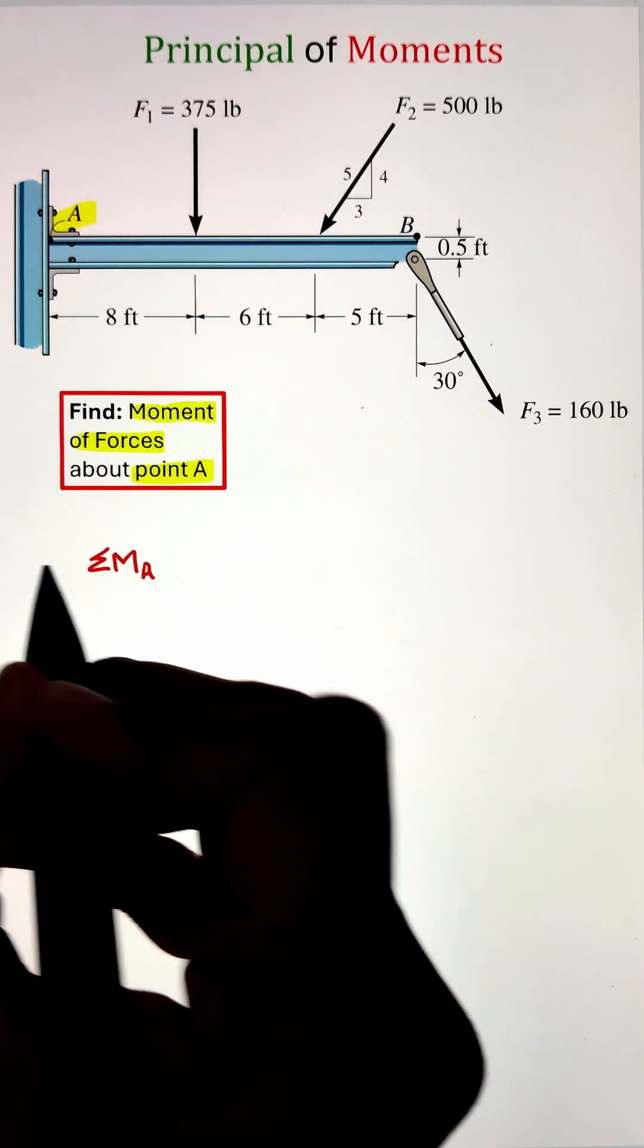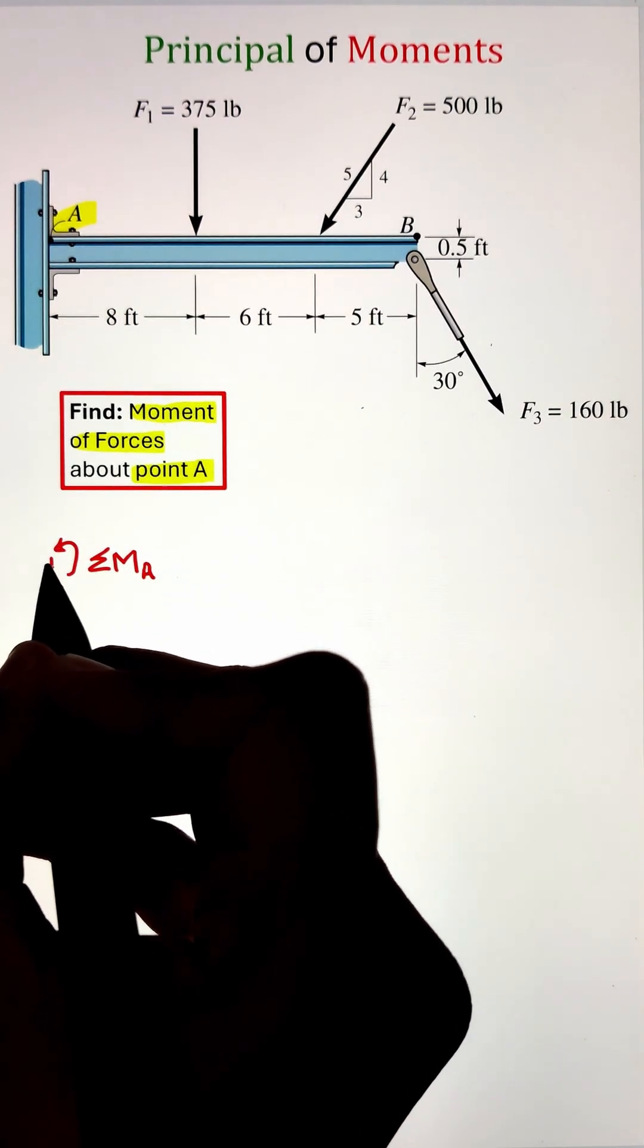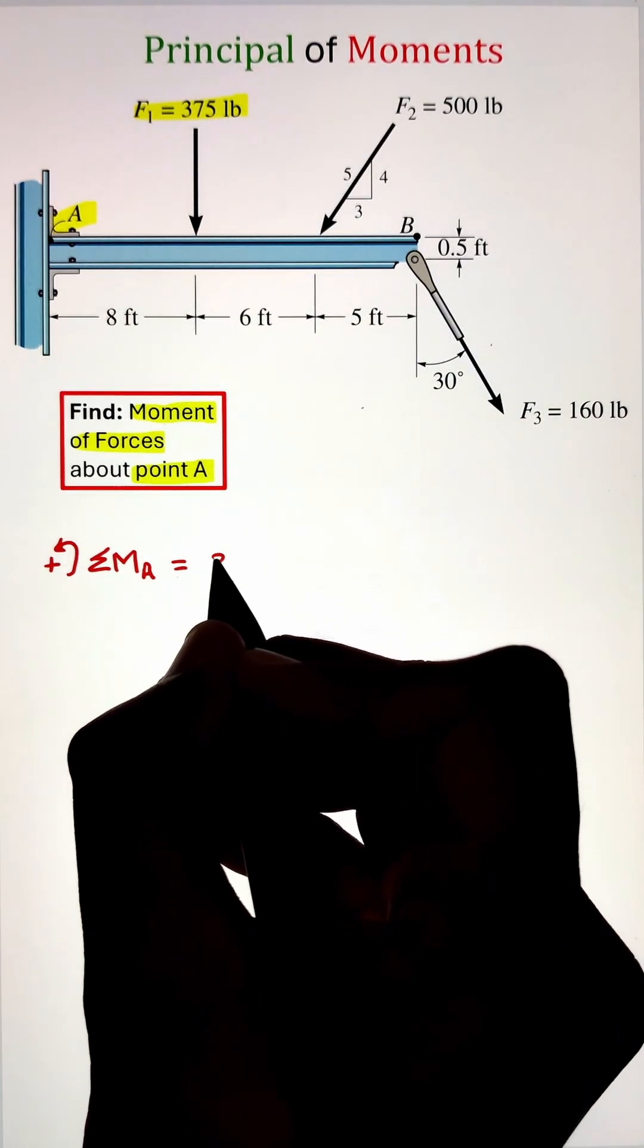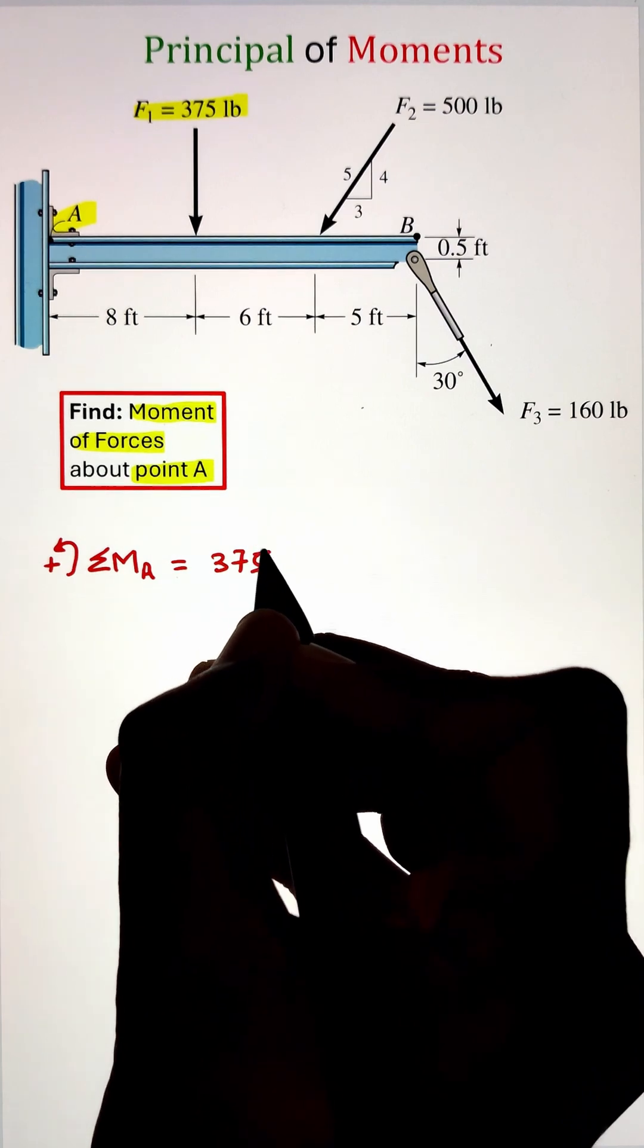Next, let's look at force F1 having a magnitude of 375 pounds acting vertically downward. The moment arm this force makes with point A is 8 feet. Multiplying the force with its moment arm will give us the magnitude of the moment.